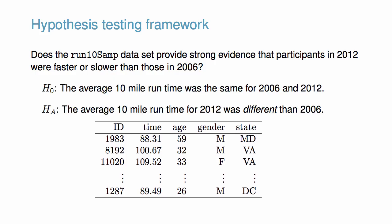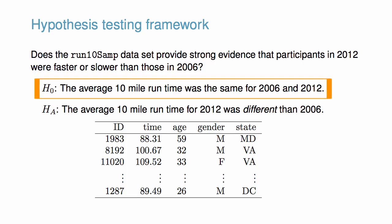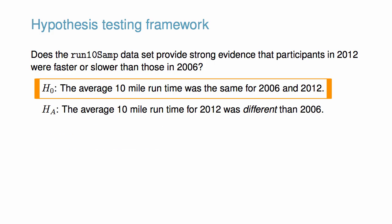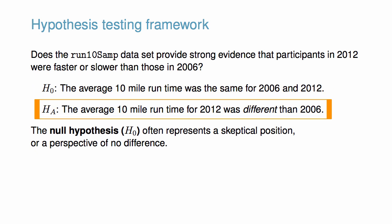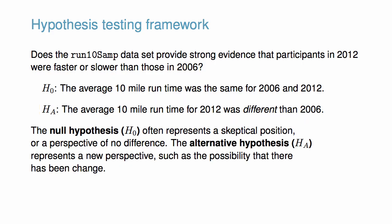We assess this with two competing hypotheses. The null hypothesis is that the average 10-mile run time was the same for 2006 and 2012. This represents a skeptical position or perspective of no difference. The alternative hypothesis is that the average 10-mile run time for 2012 was different than 2006. This represents a new perspective, such as the possibility that there has been a change.